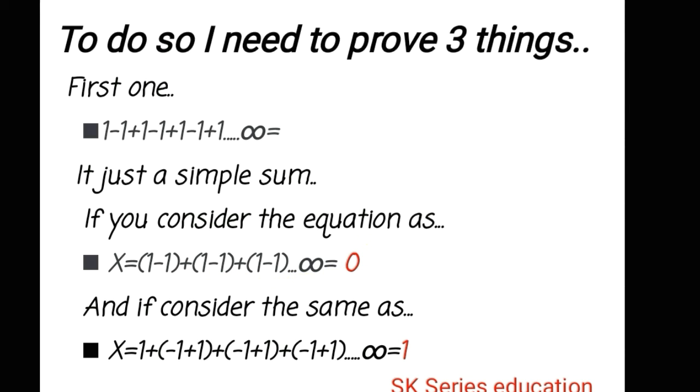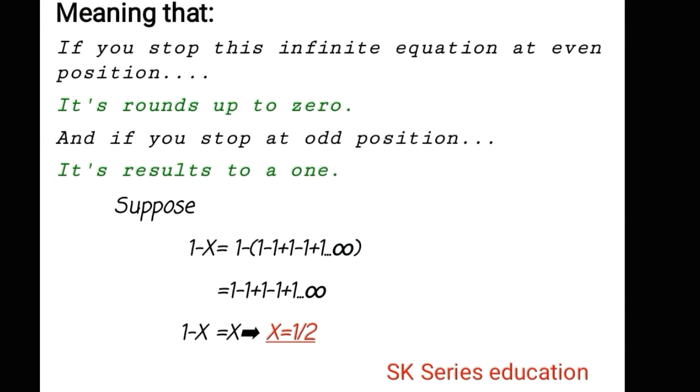the same equation by neglecting the first chunk, it results to 1. That means if I stop this equation at even position it results to 0, and if I stop this at odd position it results to 1. Suppose if I subtract the whole equation from 1, it results to the same. That means 1 - X = X, and X = 1/2.